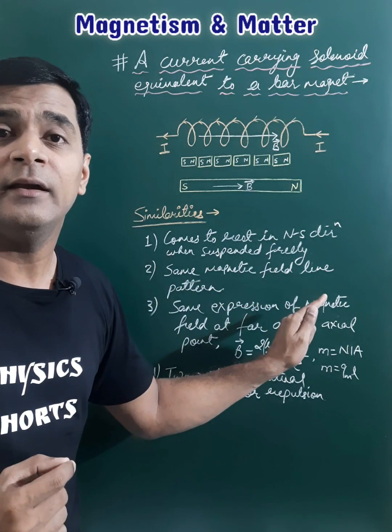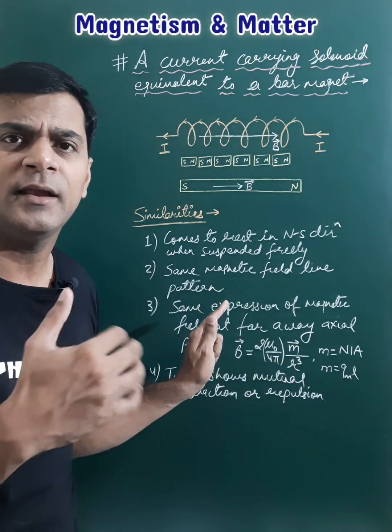Second, the magnetic field line pattern for both cases will be the same and can be drawn using a compass.